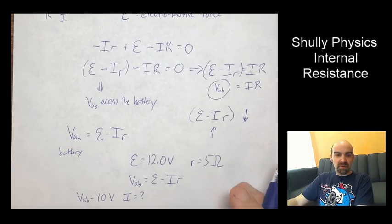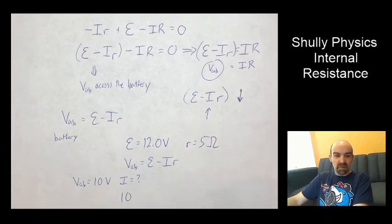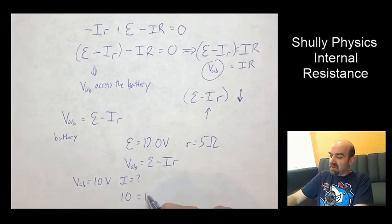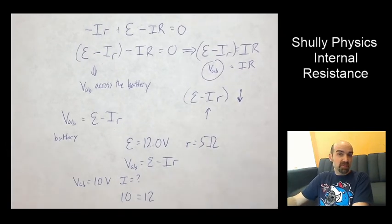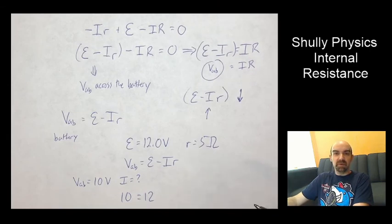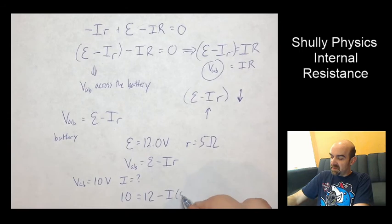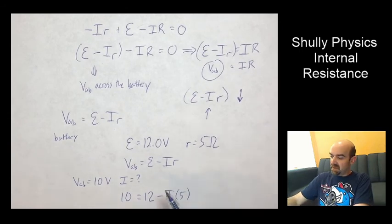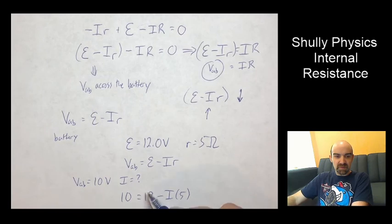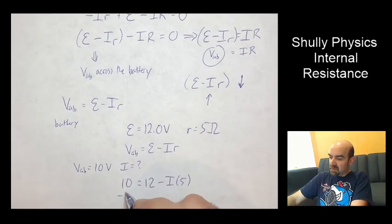So what we can do is take the 10 volts as the VAB. Its EMF without anything connected with no load is 12 volts minus I times the internal resistance of 5.